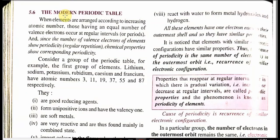Let us go to the modern periodic table. We have seen Dobereiner, Prout, and Mendeleev's periodic table and law. The next one, based on Moseley, is the modern periodic table. When elements are arranged according to increasing atomic number, those having an equal number of valence electrons occur at regular intervals or periods. Since the number of valence electrons shows periodicity, the chemical properties also correspond to that periodicity. Consider the first group elements.